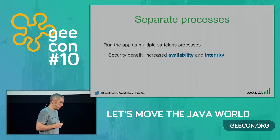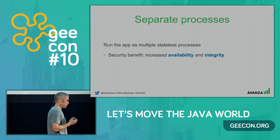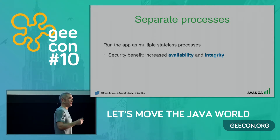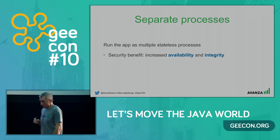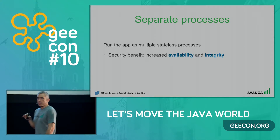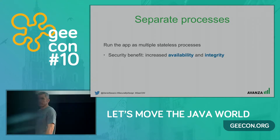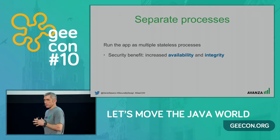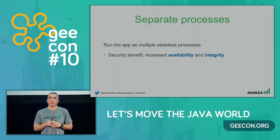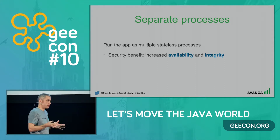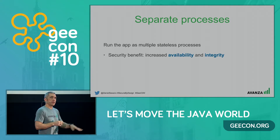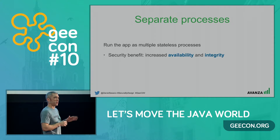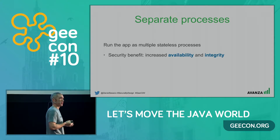Running the app as multiple stateless processes is well known. In the cloud you want to scale horizontally - add or remove instances depending on load, which makes your service more available. You also have the possibility to kill off instances that behave badly. If an instance gets compromised or starts serving bad data, you can just kill it off and the next request is handled by another instance. You're actually improving the integrity of the data served by the service.